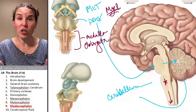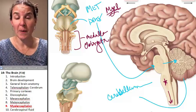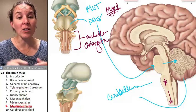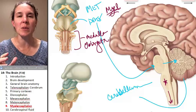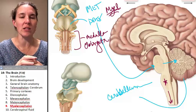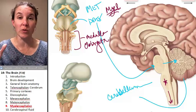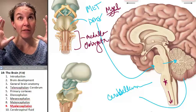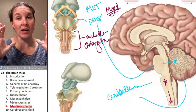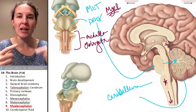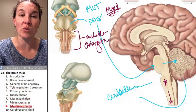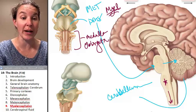So you have all your brain parts, and now we're going to look at one last piece. We're going to look at the cerebrospinal fluid, which your brain floats in, and how it kind of circulates around in your brain.